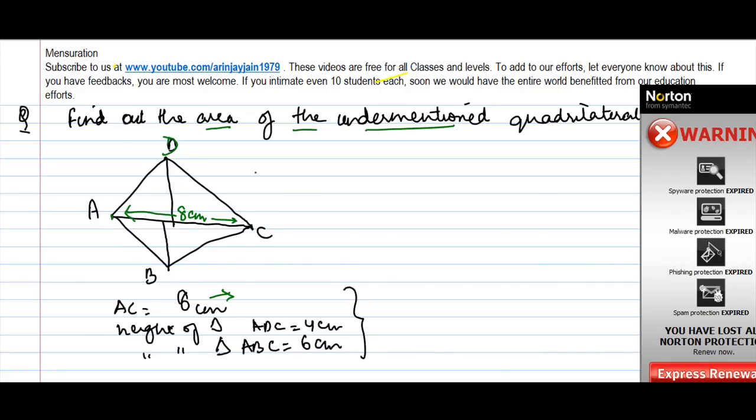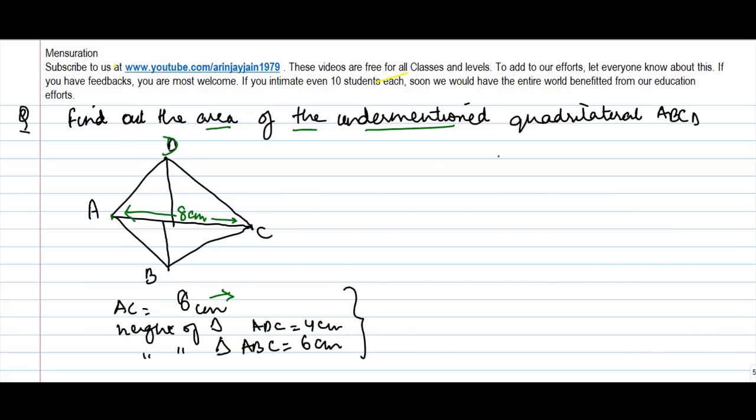The height of the triangle ADC is equal to 4 centimeters. This is a diagonal perpendicular here, so the height is 4 centimeters. The height of triangle ABC is equal to 6 centimeters. ABC is this triangle, and this height is 6 centimeters.